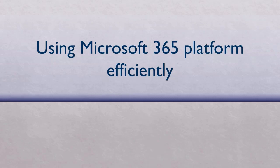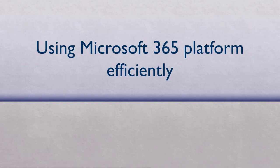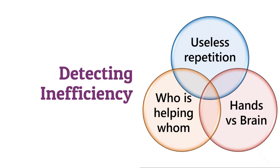So I'll give you three simple principles of detecting inefficiency — while you're working, check: am I doing something repetitively? For example, dragging formulas, copying, pasting, copying, pasting — stuff like that. If I'm doing something repetitively, that's the first check.